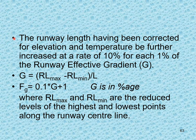Temperature correction factor fₜ is computed using formulas depending on whether elevation is in meters or feet. The runway length corrected for elevation and temperature is further increased at 10% for each 1% of effective runway gradient G. Effective gradient G = (maximum reduced level − minimum reduced level) / L, where L is the corrected runway length. Gradient factor: f_g = 0.1 × G + 1, where G is in percentage.